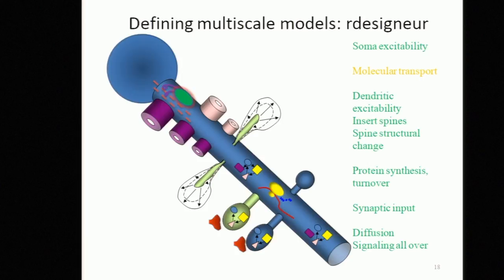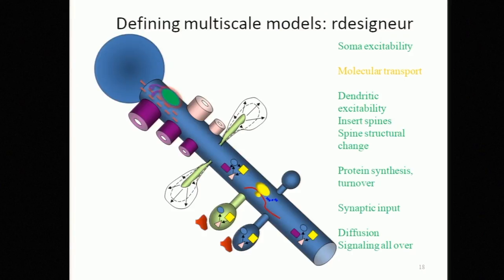We've devised something called R-Designer — Reaction Diffusion and Electrical Signaling in Neurons. What it can do is: define somatic excitability, define molecular transport along the dendrites, dendritic excitability, insert spines in whatever positioning and spacing you like, address spine structural change, define protein synthesis and turnover, synaptic input, and deal with diffusion and chemical signaling all over the cell.